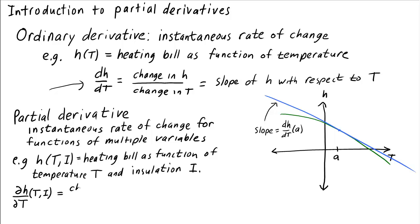So just as before, ∂h/∂T is change in h, change in your heating bill, over change in the temperature T. The idea is that when we calculate this change, we have to keep the amount of insulation fixed.